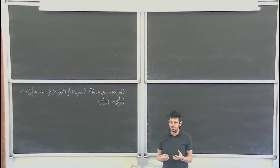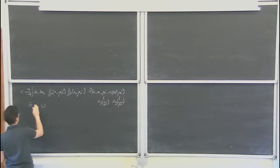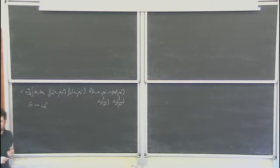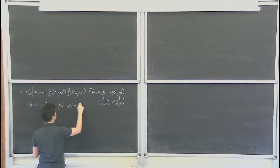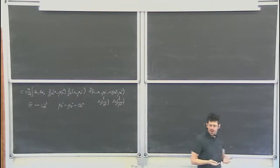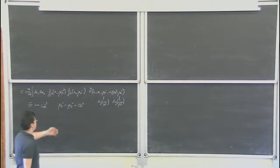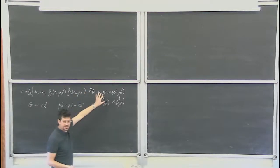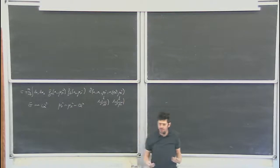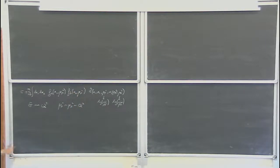You still need to choose a scale. If the partonic process involves some hard scale Q-squared, typically you take mu-F-squared and mu-R-squared to be of order Q-squared. What you do is truncate at a given order of perturbation theory, and wherever you vary mu-F-squared and mu-R-squared up to constant factors around Q-squared, you always get something at the accuracy you're working at. If you're doing NLO and NLO starts at alpha-cube, then whichever choice you make for the factorization and renormalization scale, your result is accurate at alpha-cube.